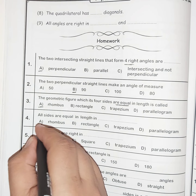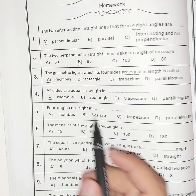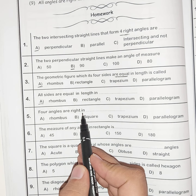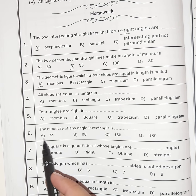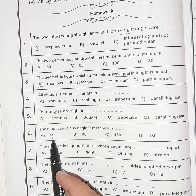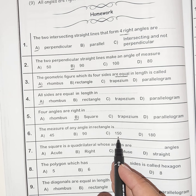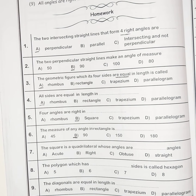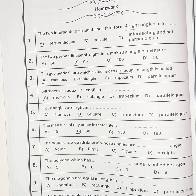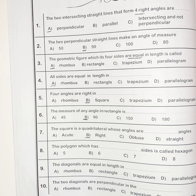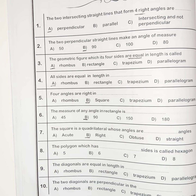Number four: all sides are equal in length in a rhombus. Four angles are right in a square and rectangle. Number six: the measure of any angle in a rectangle is 90 degrees.